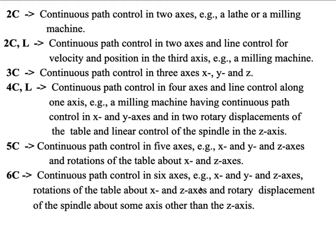The axis system of all CNC machine tools generally has a fixed datum called the machine zero datum point. When the workpiece is clamped on the machine table, the workpiece datum and the machine datum will not normally coincide. A floating zero facility is provided to relate slide displacement in part programming with the position of the workpiece on the machine table. By this means, an operator can arbitrarily designate as zero any point on each axis within the range of the slide displacement.